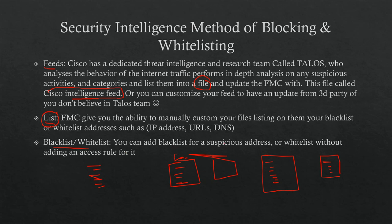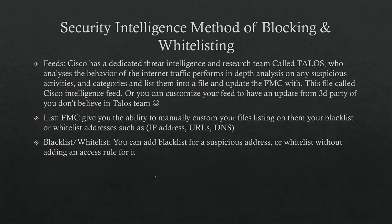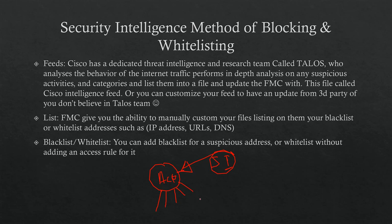You can add blacklist or whitelist entries for suspicious addresses without adding an access rule, because Security Intelligence is applied on the access control policy (ACP) as a whole, not inside individual access control rules. The SI applies to the entire ACP, which may contain several access control rules, but SI operates at the policy level — as illustrated in previous videos.